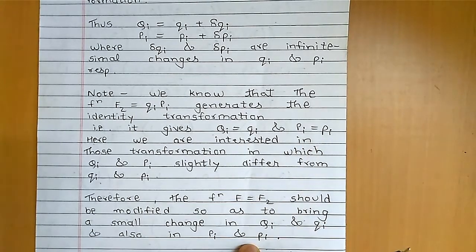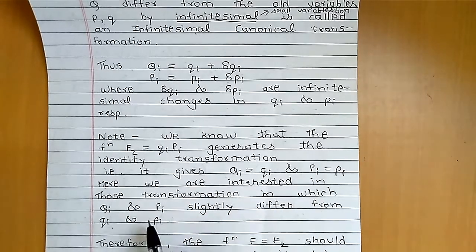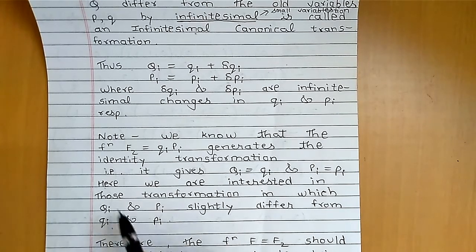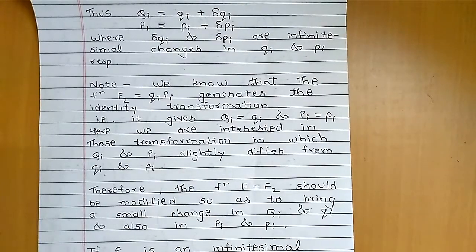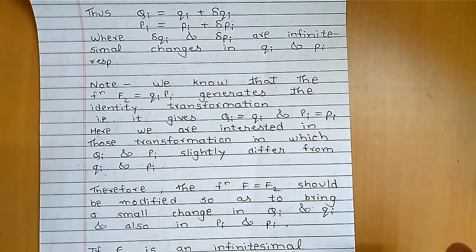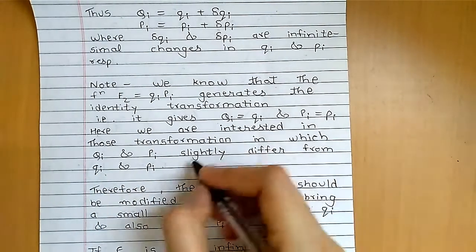Here we are interested in those transformations in which capital Q_i and capital P_i slightly differ from q_i and p_i. In other words, the new variables capital Q_i and capital P_i are only slightly different from small q_i and small p_i — they slightly differ from the old variables.